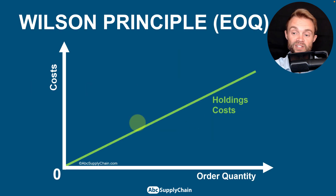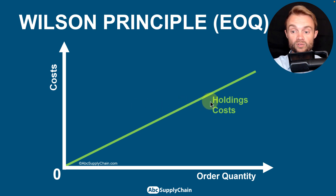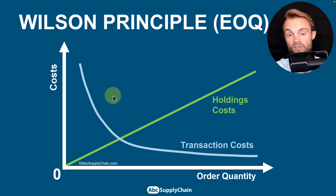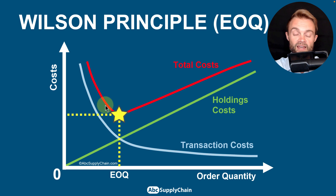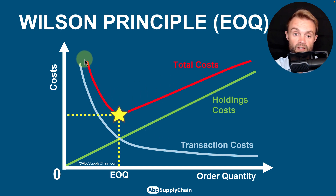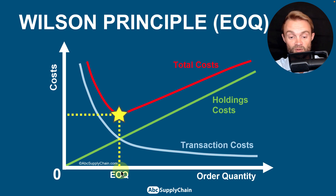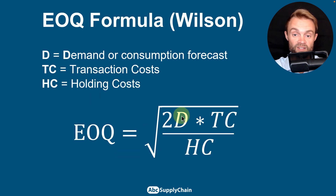The bigger your order, the more inventory you'll have and the more cost you'll carry — that's why holding cost follows a linear curve. On the other side, processing one order per year costs much less than one order per day. When you sum these two costs, the total cost curve has an inflection point — that balance point is called the EOQ, the economic order quantity.